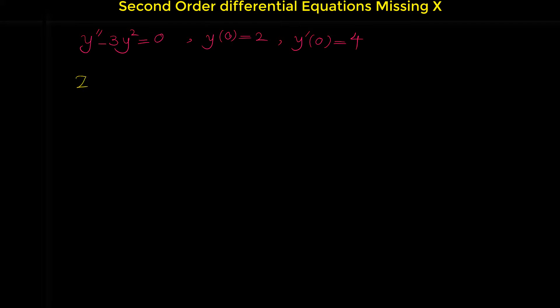We suppose z to be y prime. And from this, y double prime is z dz over dy.